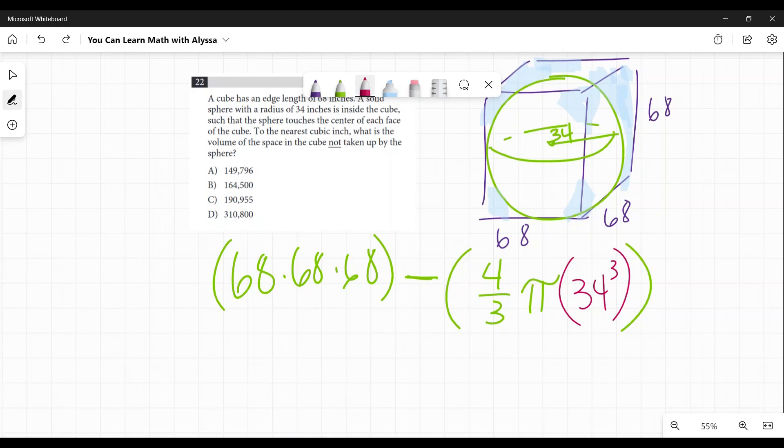68 times 68 times 68 is 314,432. Four thirds pi times 34 cubed. 34 cubed is 39,304. And if I multiply that by four thirds, which you can do quite easily in your calculator—if you don't want to get into parentheses and four divided by three, you can multiply the whole number by four and divide what you get by three. That's a little easier to do.